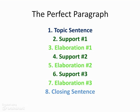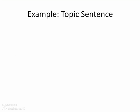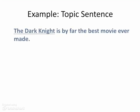Let's look at each of these and determine what exactly these parts of the perfect paragraph are. First, let's define what a topic sentence is. The topic sentence is the first sentence of the paragraph, where you state what the paragraph is about. It's very important to have a topic sentence so that your reader knows what your overall main point is. Here's an example of a topic sentence: "The Dark Knight is by far the best movie ever made." So you know from this sentence that the rest of the paragraph is going to be about The Dark Knight and why it's the best movie ever made.